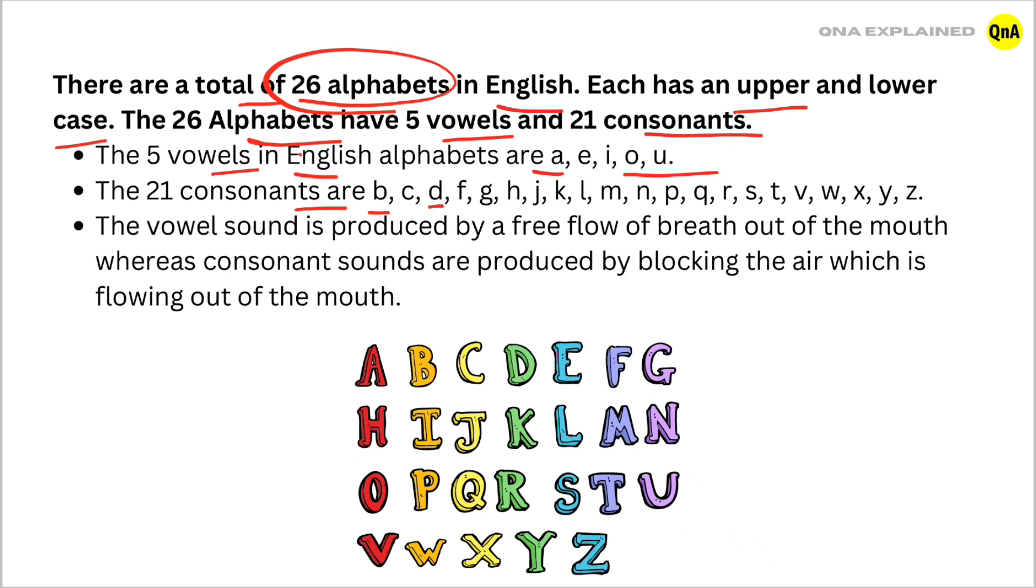The vowel sound is produced by a free flow of breath out of the mouth, whereas consonant sounds are produced by blocking the air which is flowing out of the mouth.